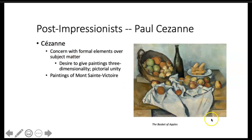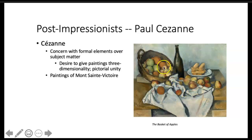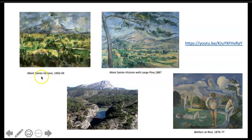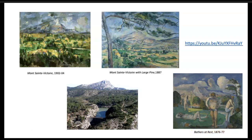Here we see one of his famous pieces, The Basket of Apples. You see a concern with formal elements over subject matter — he had a desire to give paintings three-dimensionality and pictorial unity. There's great detail to these apples and everything looks very three-dimensional. Some other famous pieces of his include Mont Saint-Victoire, and then Mont Saint-Victoire with large pine — different views of the same location. Here's a real picture of that same mountain for comparison. And then there's Bathers at Rest — another beautiful piece.